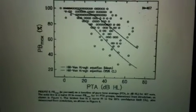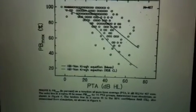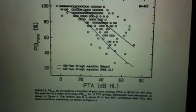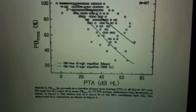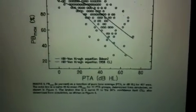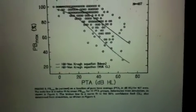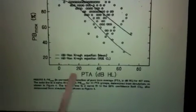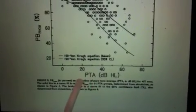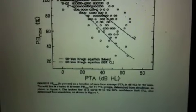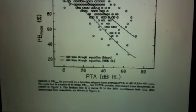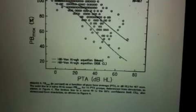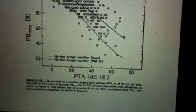This graph is one way in which we can compare how the overall hearing loss is going to influence pbmax, or performance on word recognition measures. So across the x-axis, I plot pure tone average in decibels hearing level, and across the y-axis is the pbmax, or the highest score obtained, percent correct score obtained for word recognition measures.